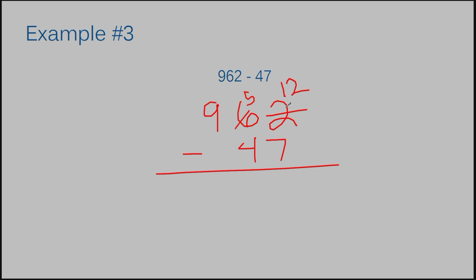Whenever you have to borrow, you have to remember that this is a 2-step process. You can't just make your first number larger by adding a 1 to it — you have to remember to take a value away from the number to the left of it. So now I have 12 minus 7, which is 5. Then 5 take away 4 is 1. My 9 was not touched. This empty space is like having a 0, so if I have 9 and I take 0 away, I still have 9. The answer to example number 3 is 915.